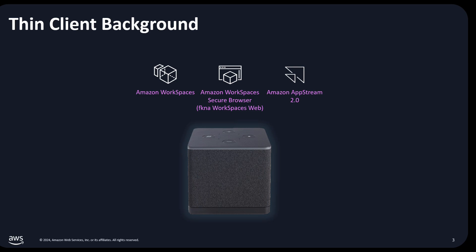Amazon Workspaces Thin Client is an affordable end-user device built to work with AWS end-user computing services, providing users with a secure solution that gives them instant access to applications and data through a familiar desktop experience. It seamlessly connects to Amazon Workspaces, Amazon AppStream 2.0 desktops, and Amazon Workspaces Secure Browser, formerly known as Amazon Workspaces Web. It reduces end-user computing costs and simplifies device logistics by shipping directly from an Amazon fulfillment center to end-users or company locations, and helps improve security by preventing users from storing data or loading applications on the local device.